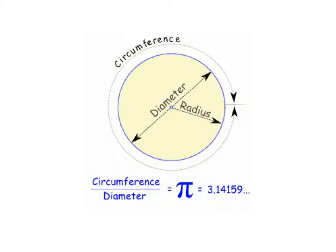Pi is the ratio of the circumference to the diameter, and we use this Greek letter to represent it. And we have to do that because pi actually goes on forever.